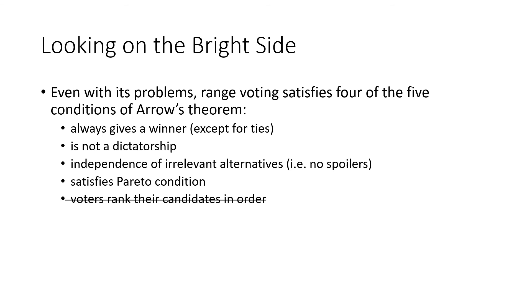So it looks like we didn't really solve the problem indicated by Arrow's theorem, which says we can't have all five properties: always giving a winner, not being a dictatorship, no spoilers, satisfying the Pareto condition, and having voters rank candidates in order. With approval or range voting we've given up ranked ballots, but these methods can still satisfy the other four properties — always a winner except for ties, no dictatorship, no spoilers, and the Pareto condition. So there is an improvement and something to be said for these methods.